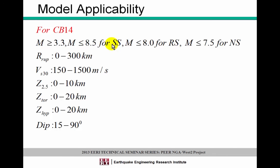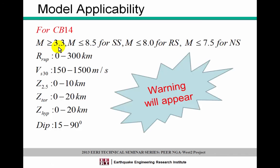A very important item related to the spreadsheet is model applicability, because all of the models have different ranges for where the model is valid. For example, for CB14 these are the model applicability cases — if you have a magnitude less than 3, you will still see the results, but you will also get a warning that this is out of range for that specific GMPE.